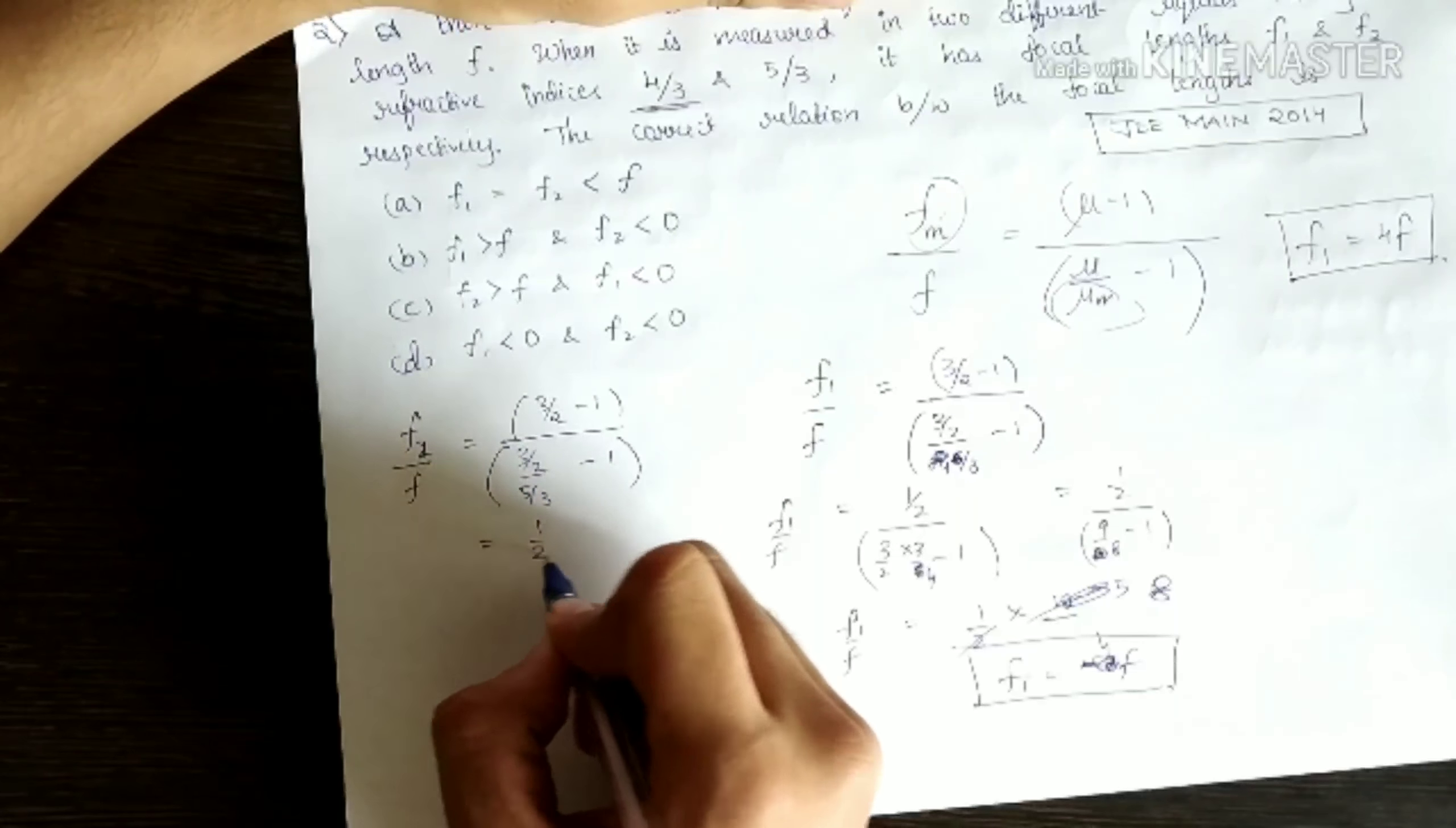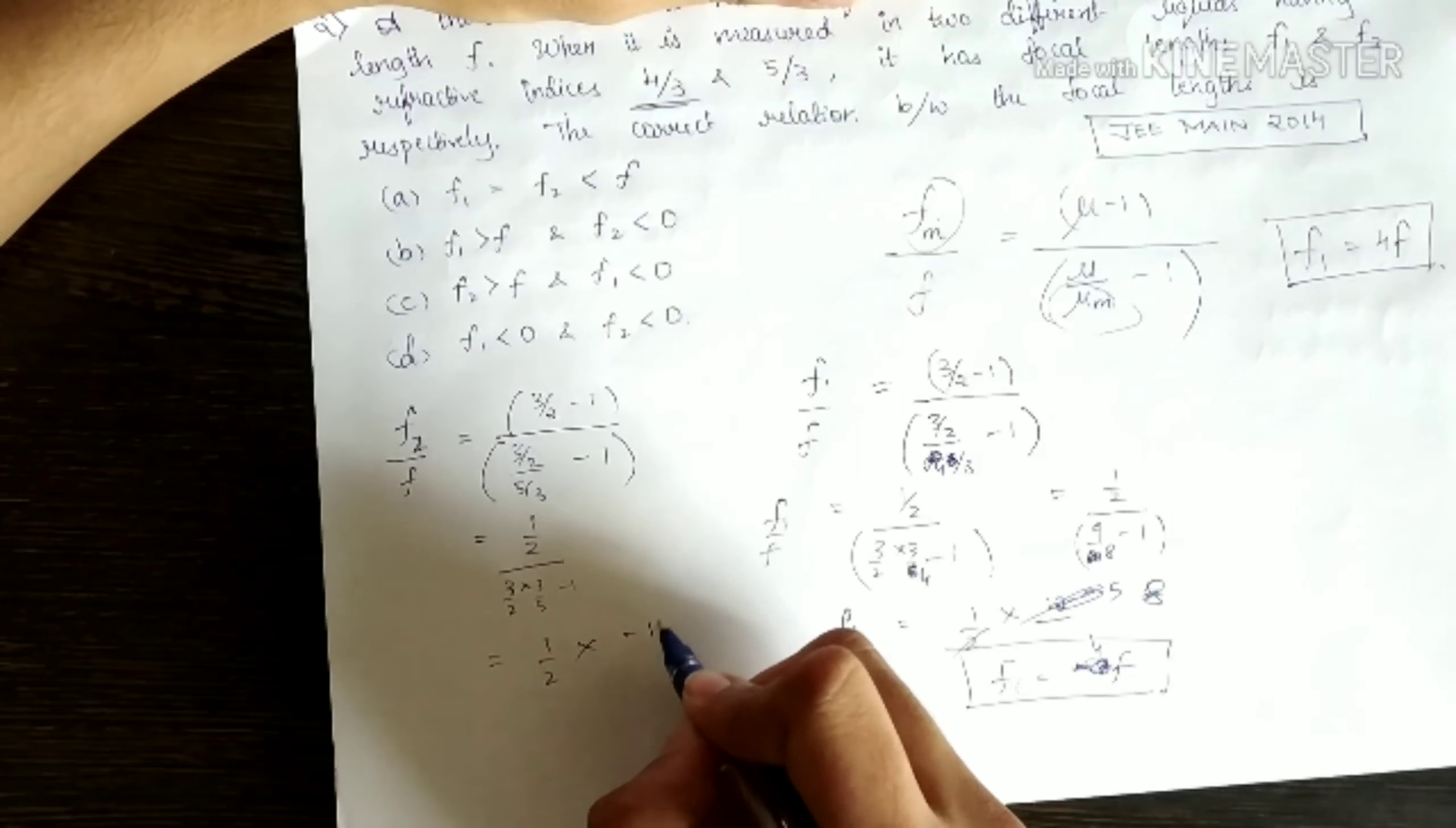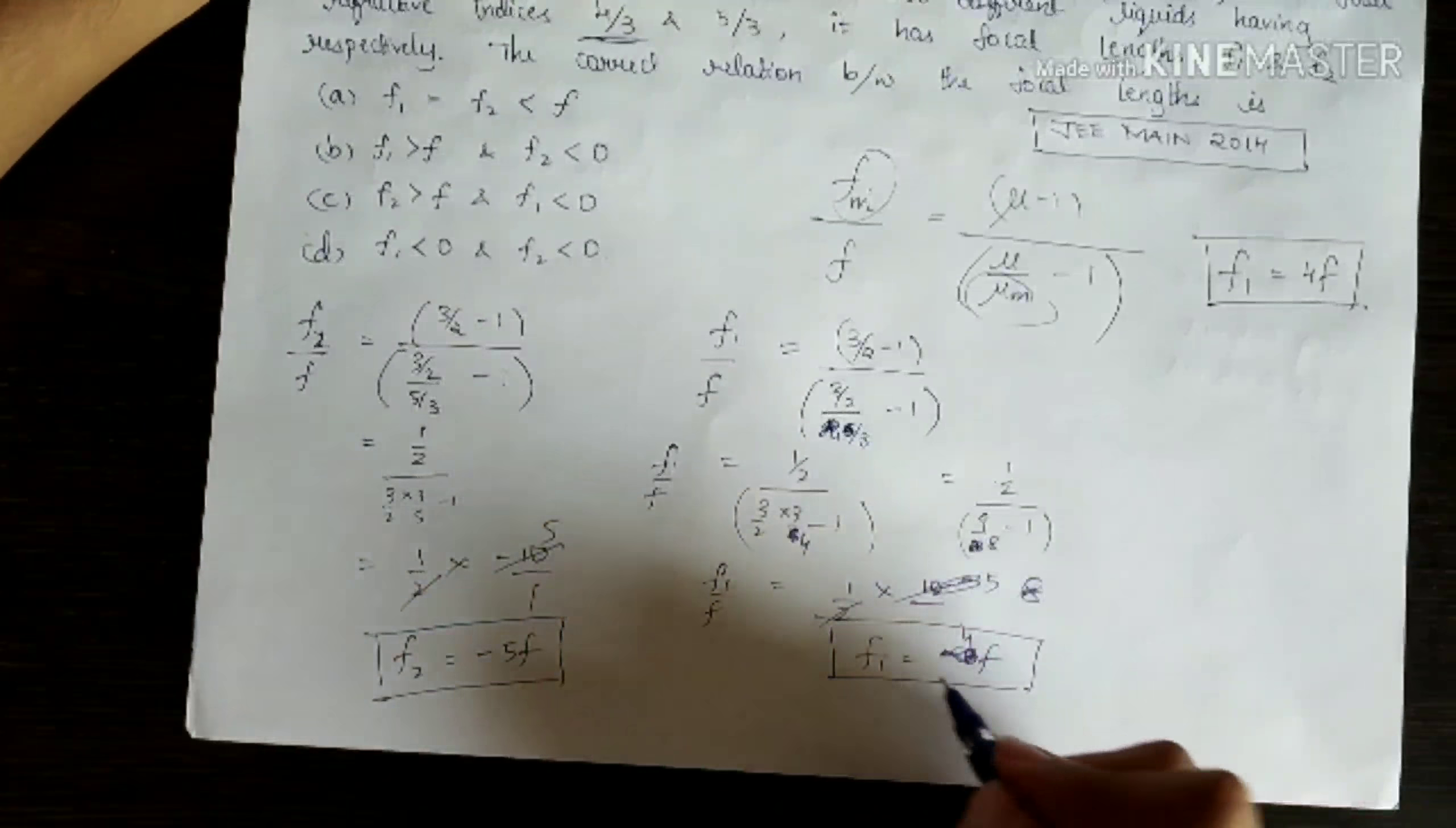And the second case, here I get 5/3 - 1, so I get 1/2 divided by, in this case, 3/2 × 3/5 - 1, that is 1/2 × (-10), I think 9 - 10, yeah, -10/1 is what I get, that is -5. F2 = -5F, and F1 = 4F.